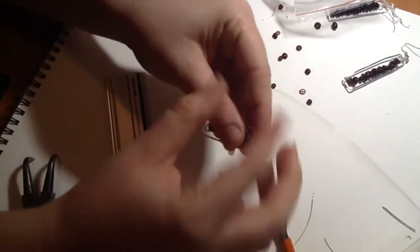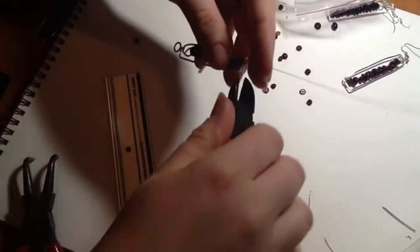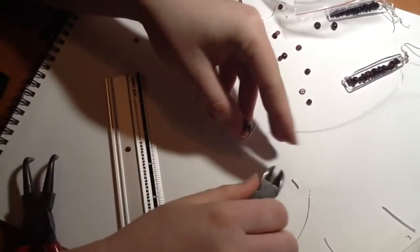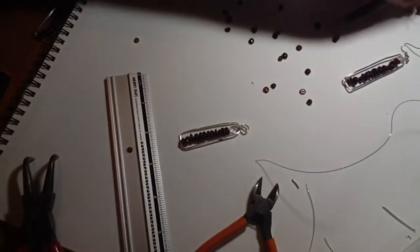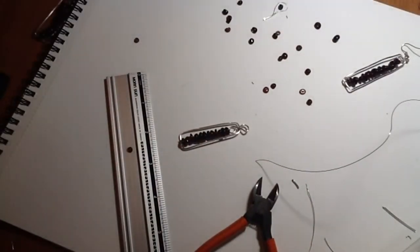Okay, now what we'll do is we'll just trim off our excess wire, and all we've got to do now is add our earring hook, which I'm going to take off this one because I have forgotten to grab another one.